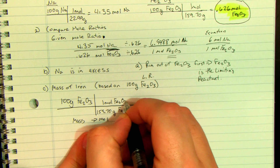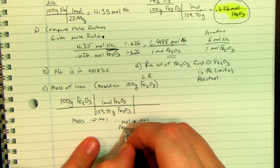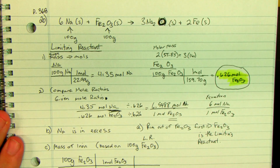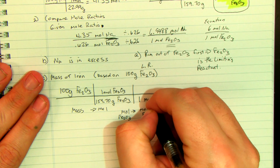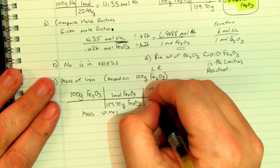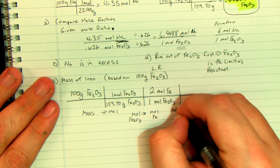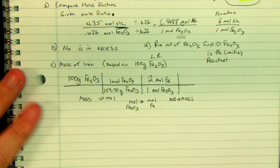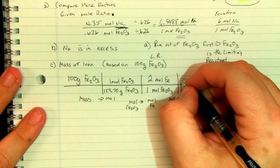Now I have to go from moles of Fe2O3 to moles of iron using the equation. The coefficient on Fe2O3 is 1, and the coefficient on iron is 2, so I have 1 mole of Fe2O3 giving 2 moles of Fe. Then I go moles to mass — one mole of Fe gives 55.85 grams of Fe.